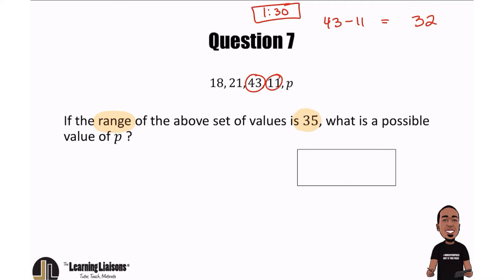Okay, so the current range without P is 32. So what that instantly tells me is that P has to be outside of 43 and 11, because that's what's going to increase the range.